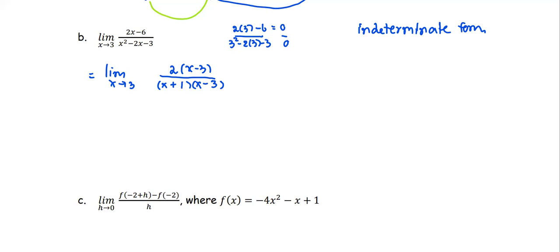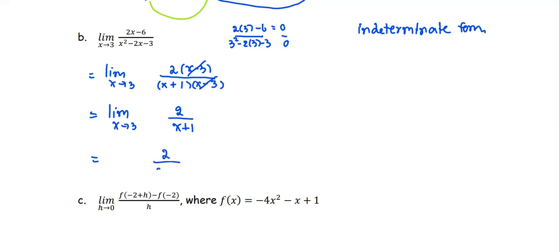We can see the common factor (x − 3) in numerator and denominator, which cancels. The simplified expression becomes 2 / (x + 1). At this point, substituting x = 3 gives no indeterminate form or zero denominator. So the limit equals 2 / (3 + 1) = 2/4 = 1/2. The answer is one half.